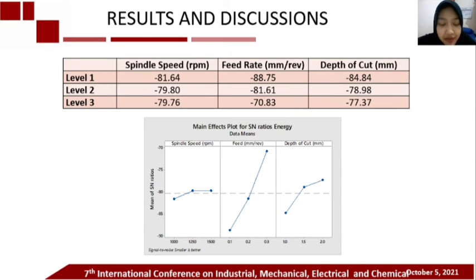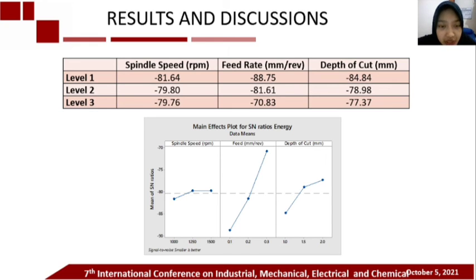We can conclude that the optimal parameters are spindle speed at 1,500 rpm, feed rate at 3 mm per revolution, and depth of cut at 2 mm.